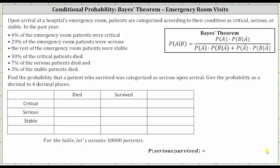In this example, we will determine a conditional probability using a table and then also using Bayes' theorem. Upon arrival at a hospital's emergency room, patients are categorized according to their condition as critical, serious, or stable.